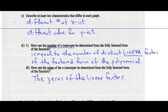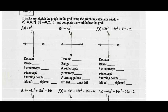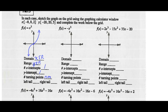Part 3. Sketch the graph on the grid using the graphing calculator window given. F(x) = x³. The domain is x is any real number; it goes forever right and left. The range is y is any real number; it goes forever up and down. There is one x-intercept, one y-intercept, no turning points, but there is one point of inflection. The left tail goes down and the right tail goes up.